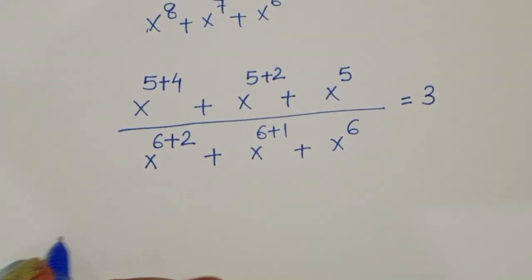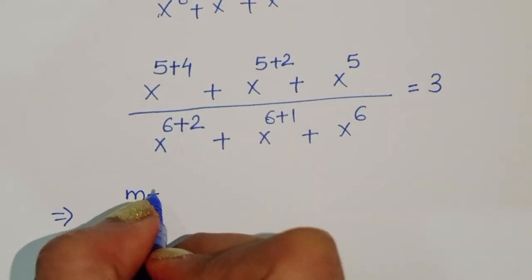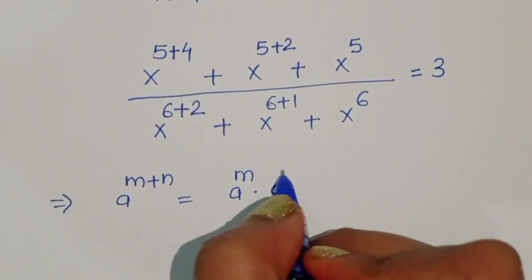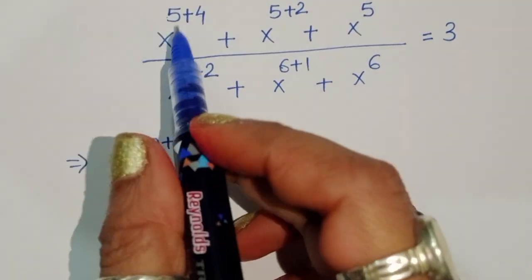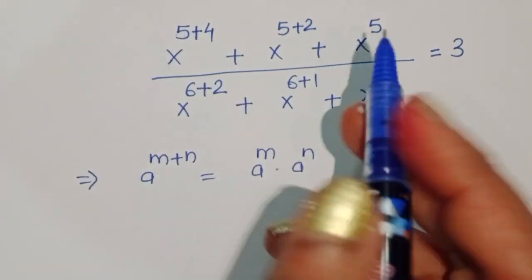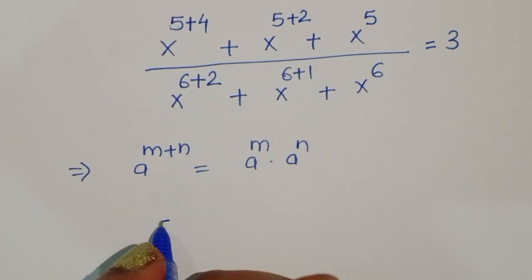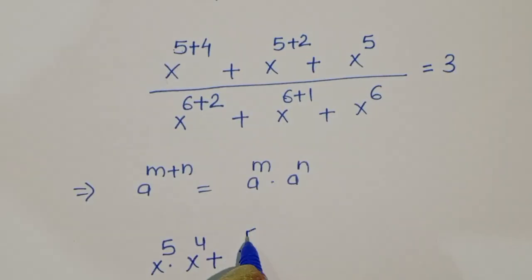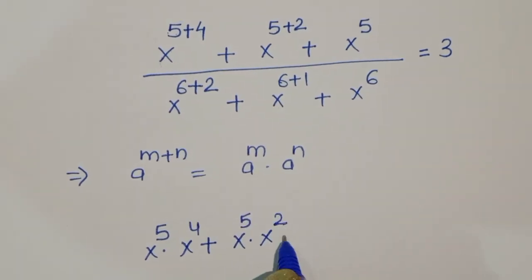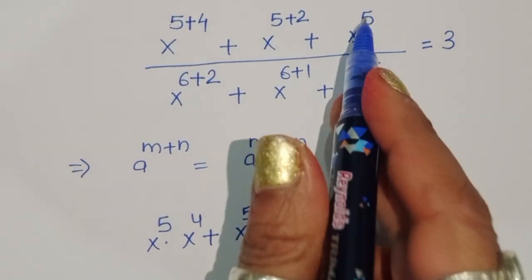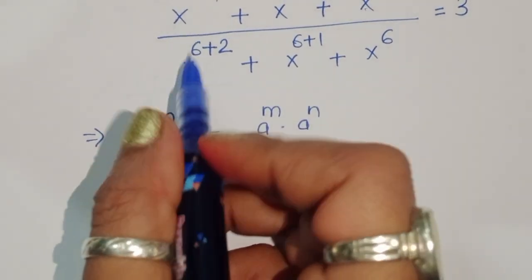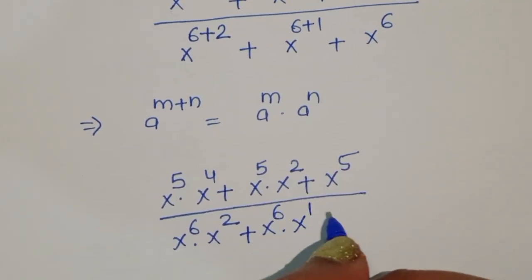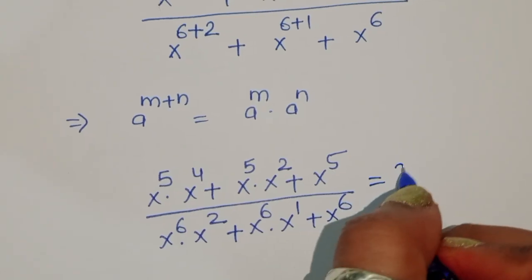Now we use the formula: a power m plus n equals a power m times a power n. Using this formula, we can write: x power 5 times x power 4 plus x power 5 times x power 2 plus x power 5, divided by x power 6 times x power 2 plus x power 6 times x power 1 plus x power 6, equals 3.